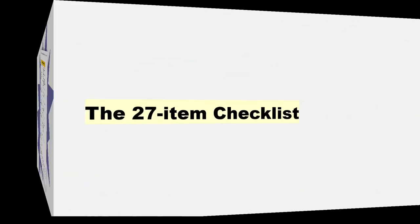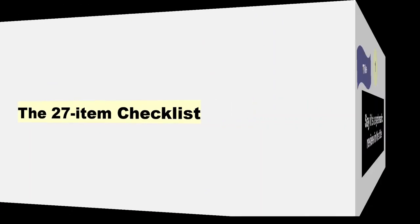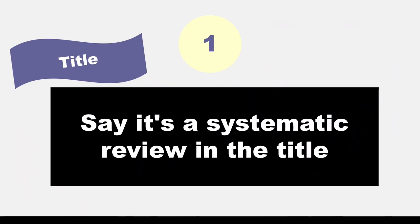Today, I want to go over the 27-item checklist to help you become familiar with each reporting standard. The first item is for the title and it only asks that you identify the report as a systematic review in the title. This will make it easier for readers to identify it as such.